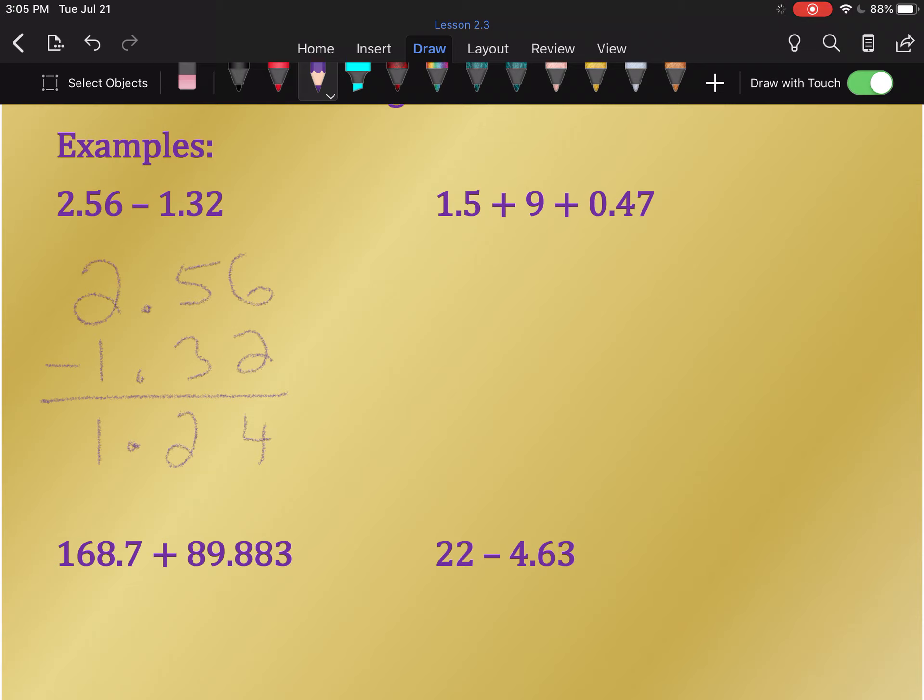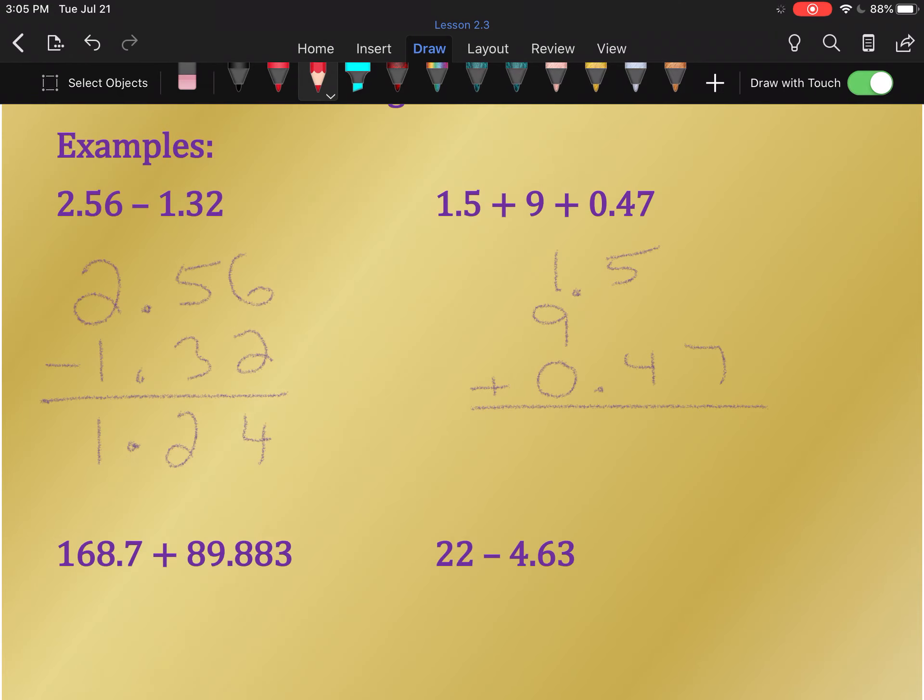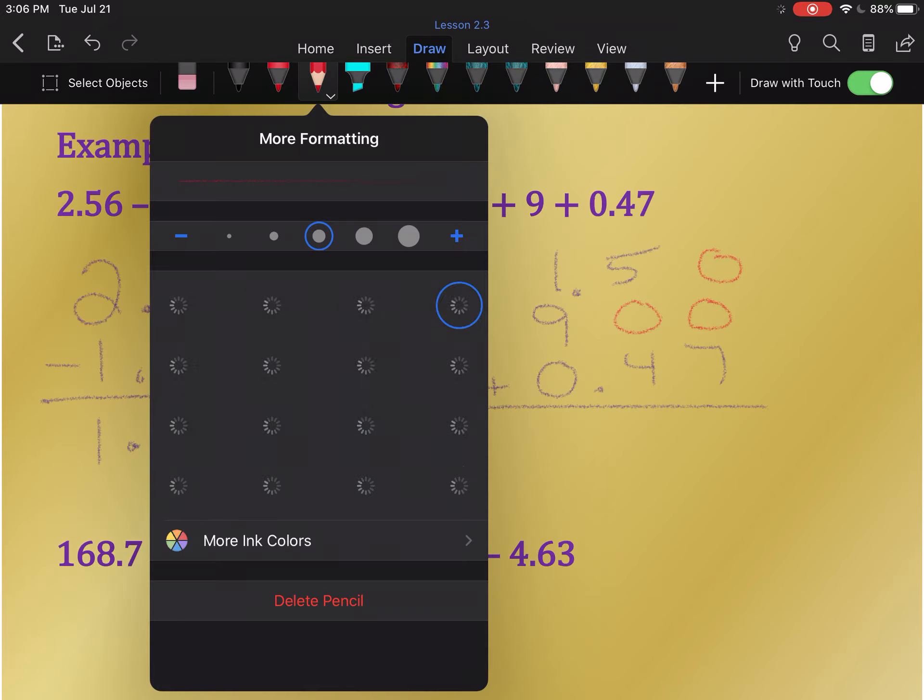Next, we have addition, and these numbers all have different place values. So watch: we do 1.5, 9 goes in the ones position, and 0.47. We're adding. Now you will notice very quickly there's quite a bit of gaps here. Fill in the gaps with zeros.